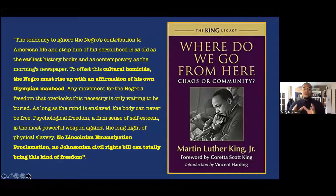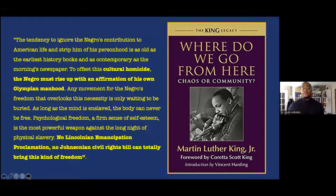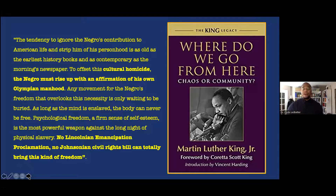From Dr. King's 1967 book, Where Do We Go From Here? Community or Chaos, he says: 'The tendency to ignore the Negro's contribution to American life and strip him of his personhood is as old as the earliest history books and as contemporary as the morning's newspaper.' To offset this cultural homicide, the Negro must rise up with an affirmation of his own Olympian manhood. Any movement for the Negro's freedom that overlooks this necessity is only waiting to be buried. As long as the mind is enslaved, the body can never be free. Psychological freedom — a firm sense of self-esteem — is the most powerful weapon against the long night of physical slavery.